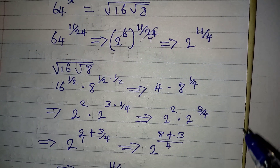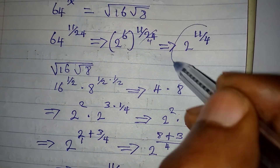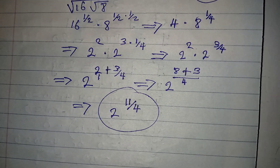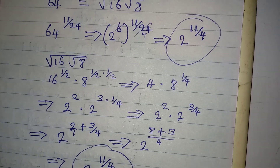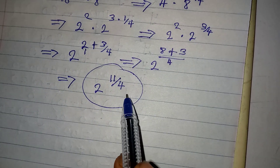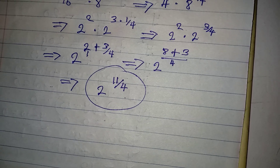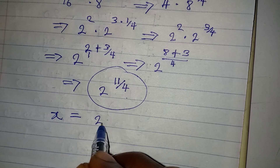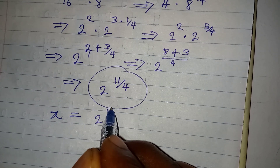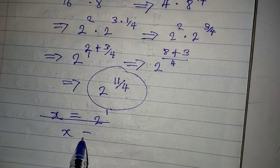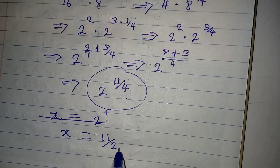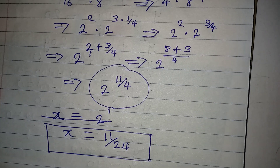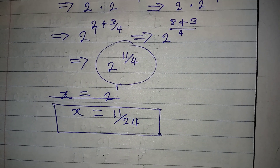Comparing both sides: the left-hand side gives 2 to the power of 11 over 4, and the right-hand side also gives 2 to the power of 11 over 4. They are equal — this confirms that x is truly equal to 11 over 24. That is the value of x that satisfies the given equation. Thank you for watching.